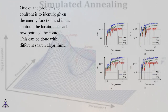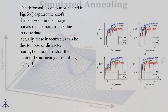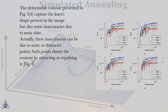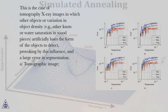In order to completely isolate the knot as shown in figure 3d, one of the problems to confront is to identify, given the energy function and initial contour, the location of each new point of the contour. This can be done with different search algorithms. The deformable contour in figure 3d captures the knot's shape, but also some inaccuracies due to noisy data — these inaccuracies can be due to noise or distractor points, both of which distort the contour by attracting or repulsing it.